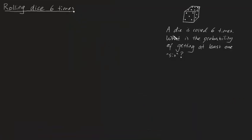G'day guys, I've got a fairly interesting probability puzzle for you. A die is rolled six times. What is the probability of getting at least one six?